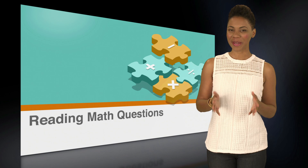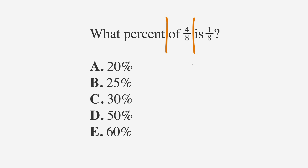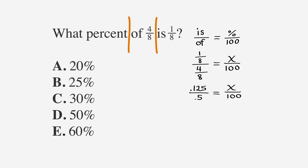How'd you do? Let's work through the problem and see if we get the same answer. We can solve this problem using the equation: is over of equals percent over 100. We substitute 1 eighth in for 'is' since it's grouped with the word 'is' in our problem, and 4 eighths in for 'of' since it's grouped with 'of' in our problem. If we convert that to decimals, we get 0.125 over 0.5 equals x over 100.